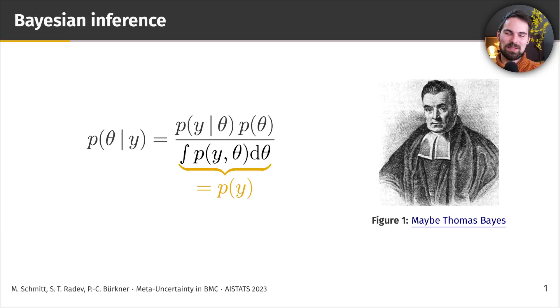This is a presentation about Bayesian inference, so obviously we're going to have to start with Bayes' theorem. Bayes' theorem establishes a connection between the posterior distribution of parameters of interest, theta, conditional on data, y.